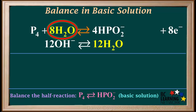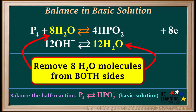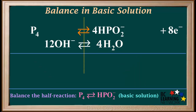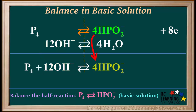Notice, we now have 8 water molecules on the left side and 12 water molecules on the right side. So to simplify, we remove 8 water molecules from both sides. Removing 8 water molecules from the left side leaves us with none, and removing 8 from the right side leaves us with 12 minus 8, which is equal to 4 water molecules. Now we add up what remains to get the overall half reaction. On the left side, we have P4 plus 12 OH⁻. On the right side, we have 4 HPO2⁻ plus 4 H2O plus 8 electrons.